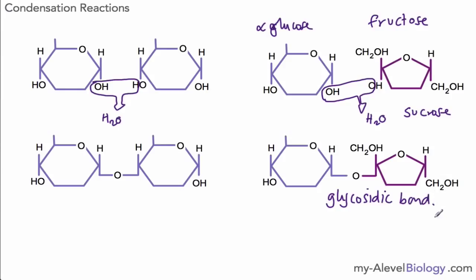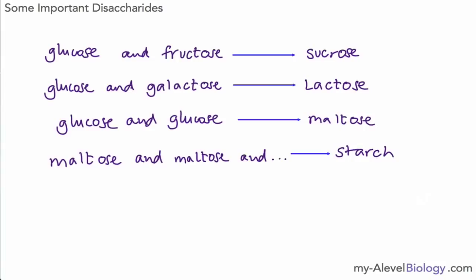Okay, so this is how two carbohydrate molecules - two glucose molecules - can join together, or maybe glucose and fructose can join together via a condensation reaction to make a disaccharide.